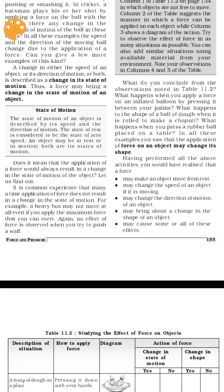What is the state of motion? The state of motion refers to the speed of an object. The state of motion is defined by how fast or slow an object is moving.